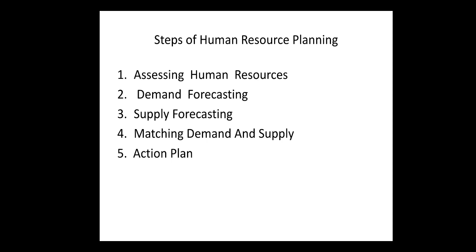The first step is assessing human resources, with environmental analysis under which we do political, economic, social and technological analysis, and internal analysis of the objectives, resources and structure. This helps to find out the type and number of employees required, the strength, weaknesses and opportunities in an organization. It also includes an inventory of the workers and skills already available within the organization and a comprehensive job analysis.